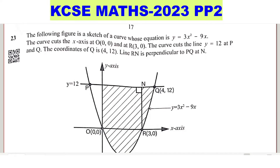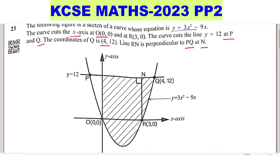Question 23. The following figure is a sketch of a curve whose equation is y equals 3x squared minus 9x. The curve cuts the x-axis at O (0, 0) and at R (3, 0). The curve cuts the line y equals 12 at P and Q. The coordinates of Q are (4, 12). Line RN is perpendicular to PQ at N. All that information is shown on the figure.